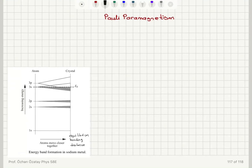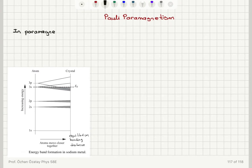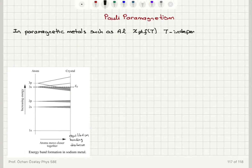We have a different type of paramagnetism in paramagnetic metals such as aluminum, and that is due to the fact that the paramagnetism is not due to localized electrons — they are due to electrons that are delocalized. In paramagnetic metals such as aluminum, susceptibility is not a function of temperature; it is temperature independent, which points to a different origin of paramagnetism.